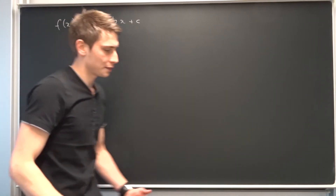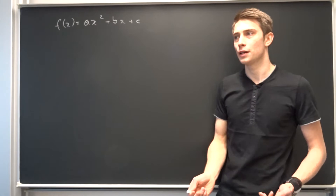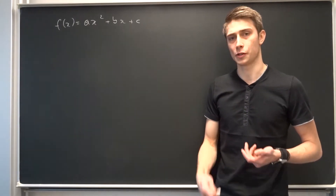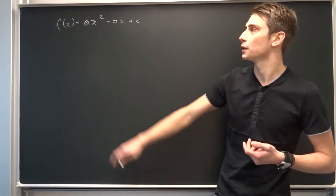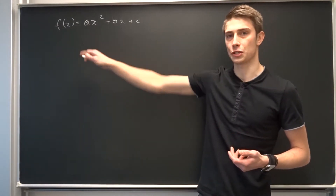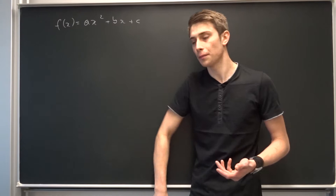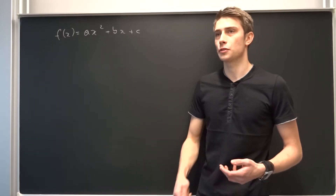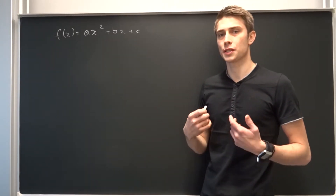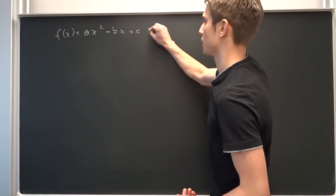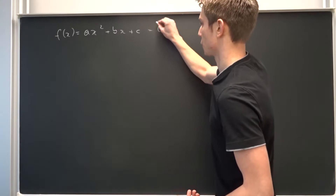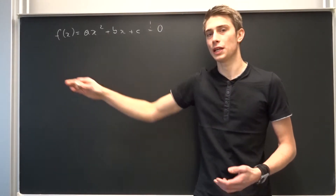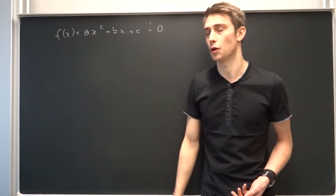As you might know, the quadratic formula gives you the roots of a polynomial of degree 2. So what does it mean to find out the roots? It's finding out the zeros of the function, so this polynomial has to equal zero.